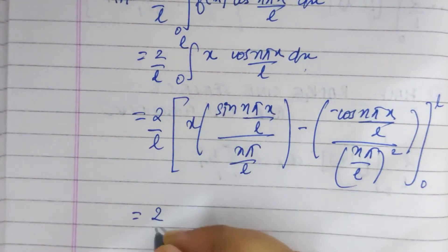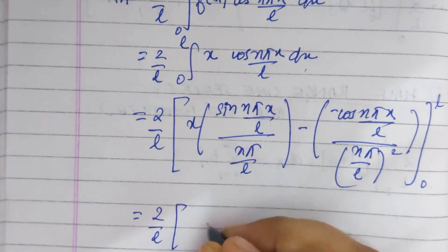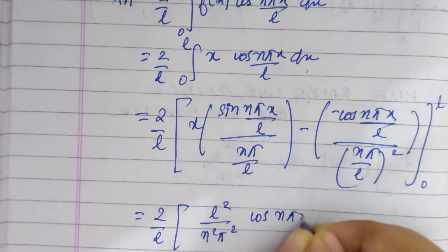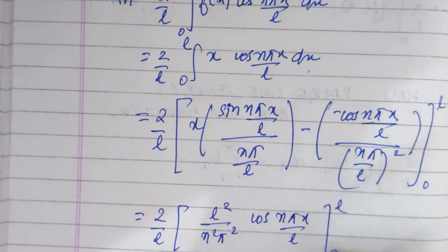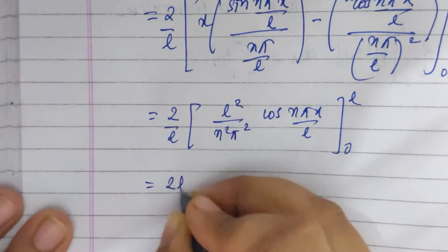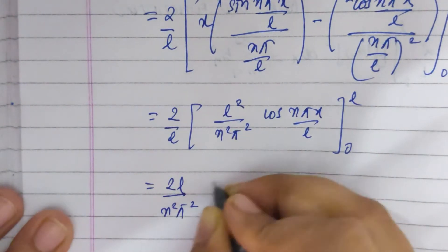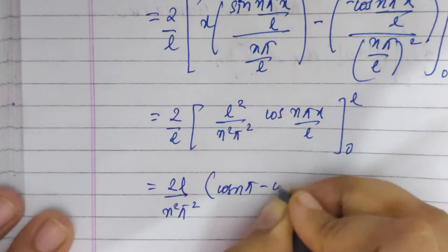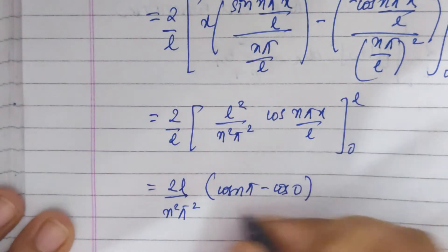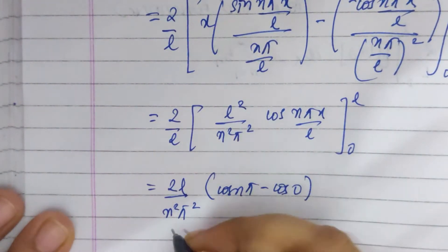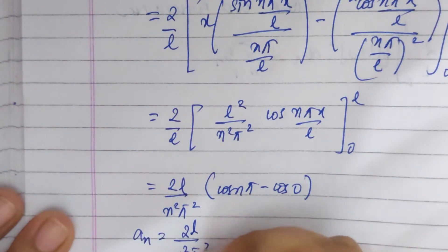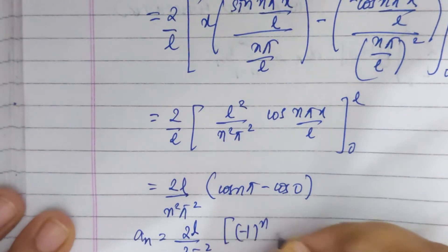Reducing this expression further, we get l squared by n squared pi squared times cos(n pi x by l) from 0 to l. On substituting the limits, we get 2l by n squared pi squared into cos(n pi) minus cos(0). Cos(0) is 1, and cos(n pi) equals minus 1 to the power n. So a_n comes out to be 2l divided by n squared pi squared into (minus 1 to the power n minus 1).